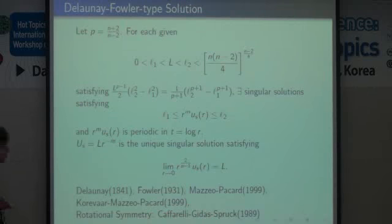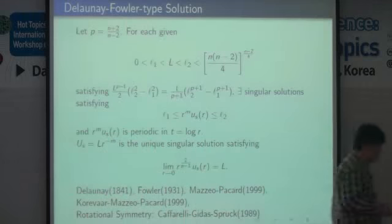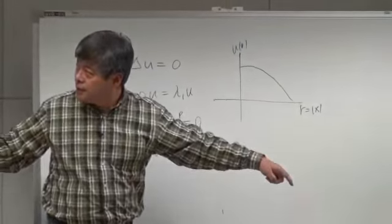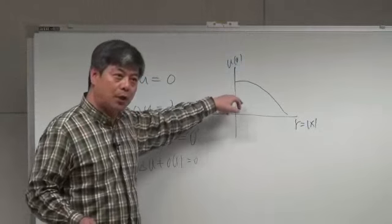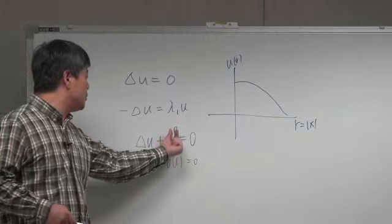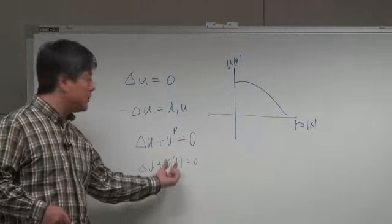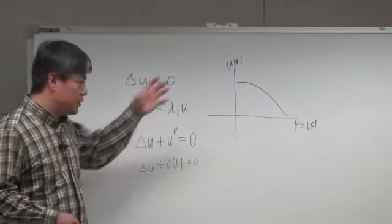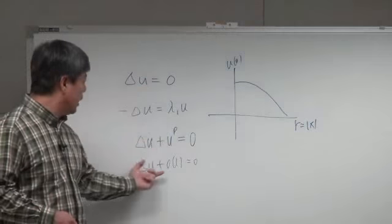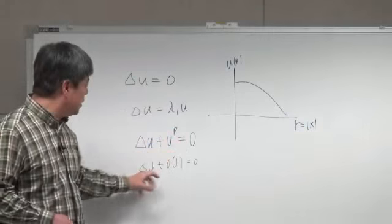In the critical case, I think this is the right viewpoint. Because, by this scaling, even though any initial data is very large, by this scaling you can bring the uniform norm down to be very small. You can consider a solution with initial data very small. Due to p being large, u is very small, so u^p is also very small. So some structure is preserved like the Laplace equation.